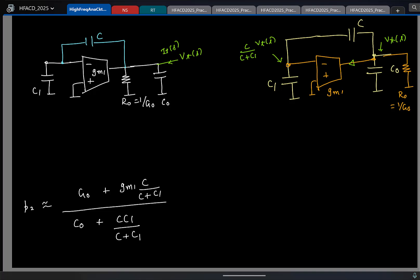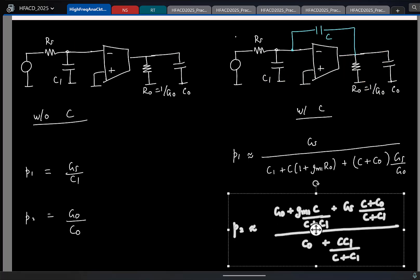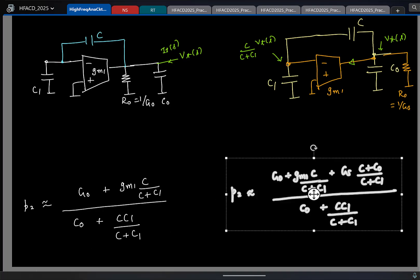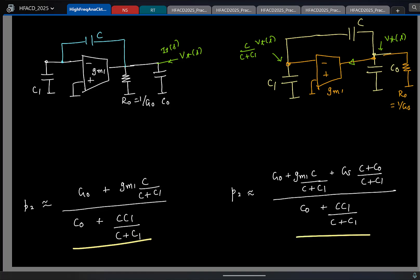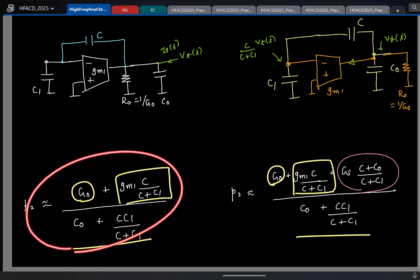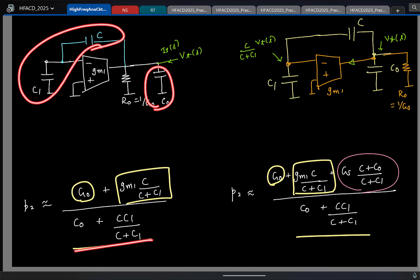Now let us look back at our mathematical calculations I did and just compare the two. So this is what I got. So denominator matches, no confusions. In the numerator I have G0 and then GM1 C by C plus C1. Again, obviously I have an error term. You know why the error is coming. But for all practical purposes, this is a very good approximation for your output pole. So that's why you don't have to memorize this thing. By looking at this circuit, you should be able to say, right?